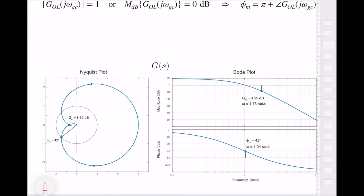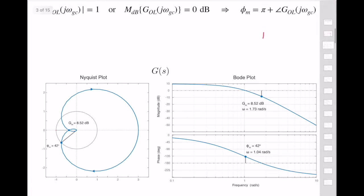How do we compute the phase margin from the Nyquist plot? We first draw a unit circle. We find the point where the polar plot crosses this unit circle, and the frequency that satisfies this is called the gain crossover frequency. This gives us a phase vector, and the phase margin is the angle between the negative real axis and this vector. For this system, it is equal to 40 degrees.